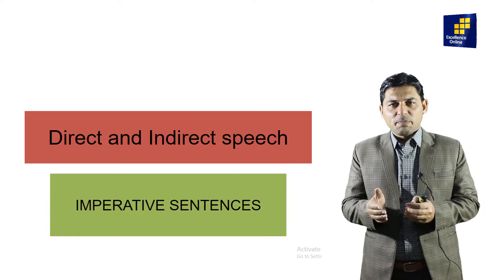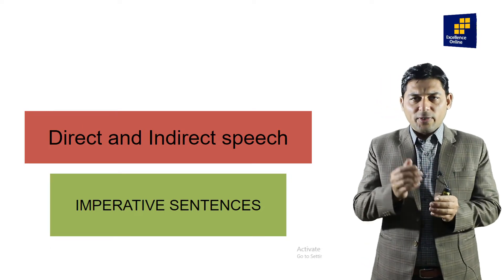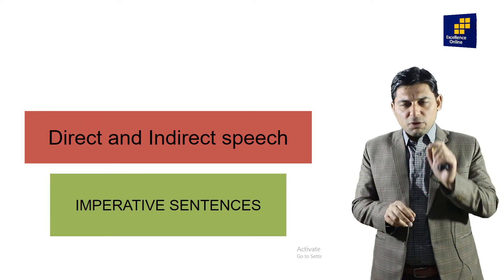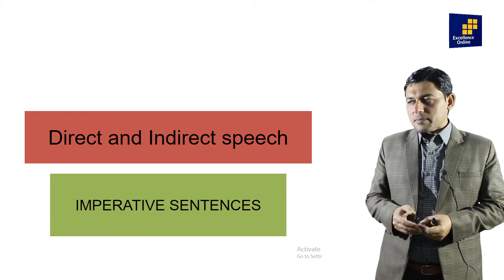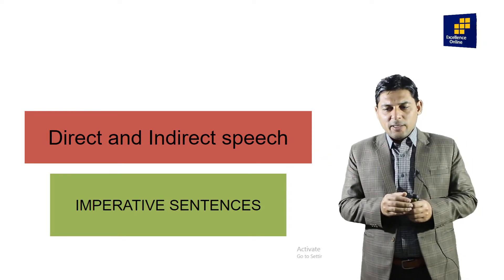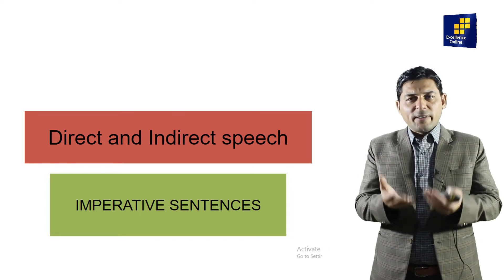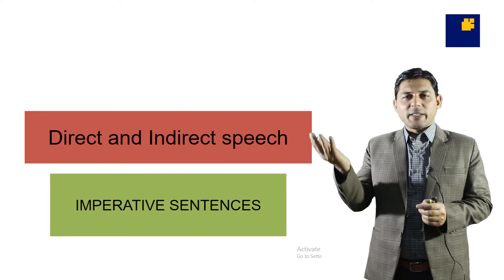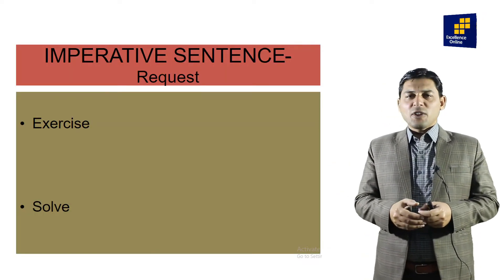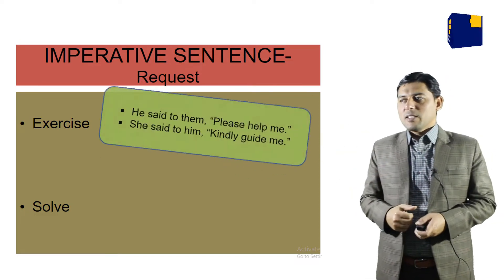The topic is direct speech and indirect speech. This is for students in ninth, tenth, first, second, or graduate class — for report writing, story writing, dialogue writing. We have different segments of this grammar topic. One is sentences, and we have approximately seven types of sentences. One is imperative sentences.